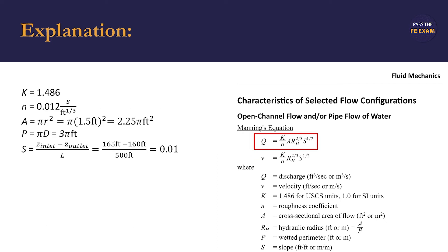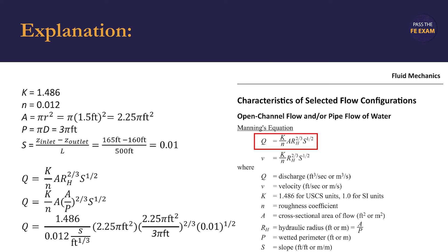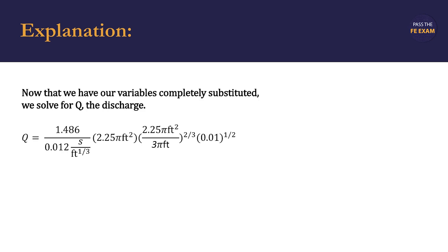Now that we've identified all of the variables, we can start substituting them into the Manning equation for discharge. As we start substituting in those variables, we see that there is actually a variable we haven't calculated yet — the hydraulic radius, denoted by R sub H. However, we can refer back to the FE manual and see that the hydraulic radius is the cross-sectional area of flow A divided by the wetted perimeter P. Thus, we substitute R sub H with the fraction A over P. After substituting in our variables, we have just one unknown, Q, the discharge we're searching for.